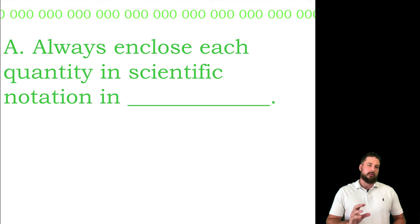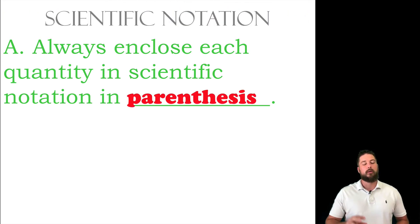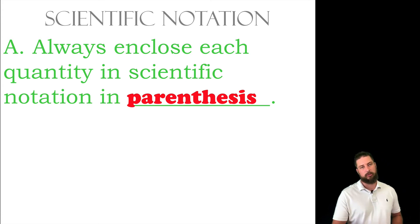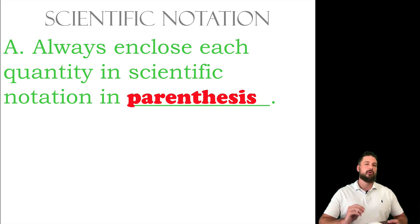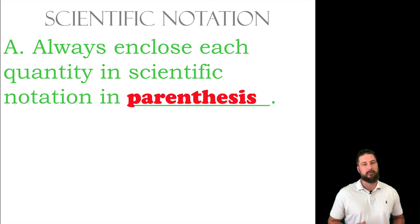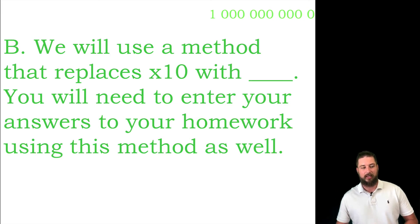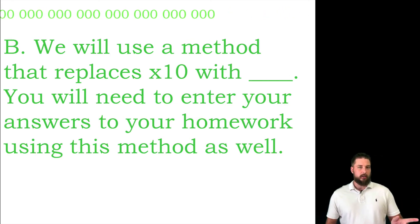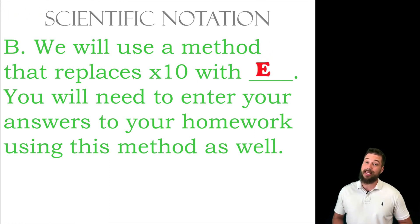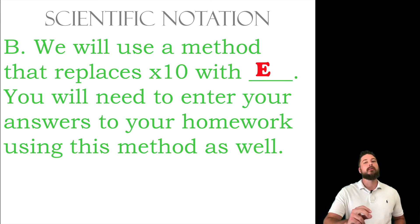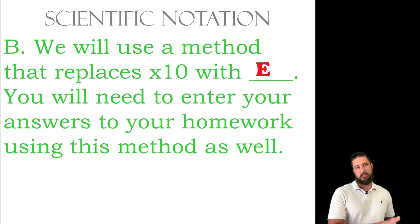Now you always, always, always want to put your scientific notation in parentheses when you are doing calculations. We're going to be using scientific notation for the whole year, and anytime you do any sort of calculation and type it into your calculator, put it in parentheses — if you do that you will be successful. One method of writing scientific notation is replacing the 'times ten to the whatever' with the letter e, which represents times ten. This is how you will see it in your calculator.